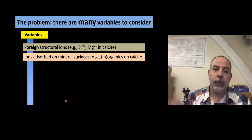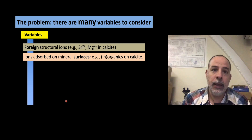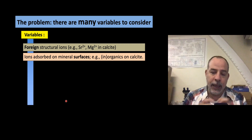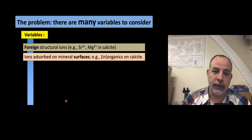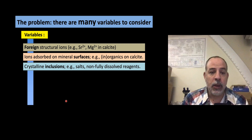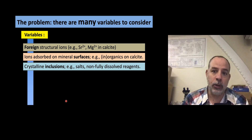Also, ions adsorbed on a mineral surface can affect quite a lot the surface properties of these minerals. A typical example: the industrial synthesis of calcite is done using organics which avoid the caking effect — they prevent calcite from forming clumps. But these organics also affect the dissolution rate and the solubility of calcite. Sometimes we have problems because of crystalline inclusions — it's very common to find salts in minerals in nature, or non-fully dissolved reagents in laboratory synthesis, and that affects properties. It's very common to find halides associated with gypsum, for example.